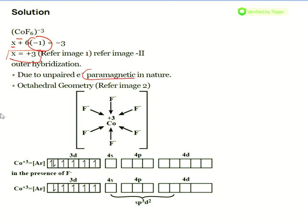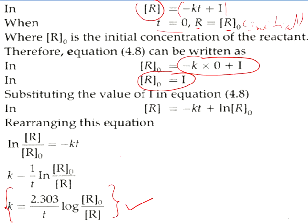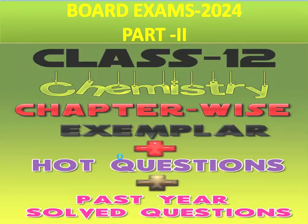Since Co³⁺ has unpaired electrons, the complex has paramagnetic nature. The geometry is octahedral. According to VBT and crystal field theory, there is d-orbital splitting. The hybridization will be sp³d², because those are the vacant outer orbitals available. So sp³d² hybridization, octahedral geometry, and paramagnetic nature — this is a good question for the exam.